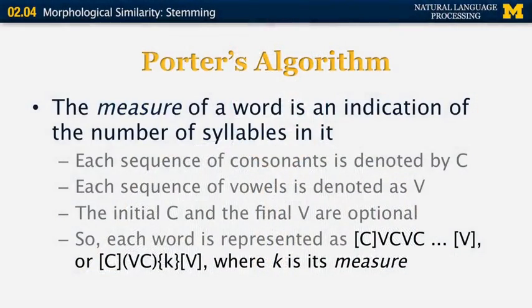The measure of a word tells you how many V-C sequences we have in the representation. Any word can be represented as an optional sequence of consonants C, followed by any number of V-C sequences, followed by an optional V. In other words, we can abbreviate the middle portion as (VC)^K, which tells you that V-C is repeated K times.